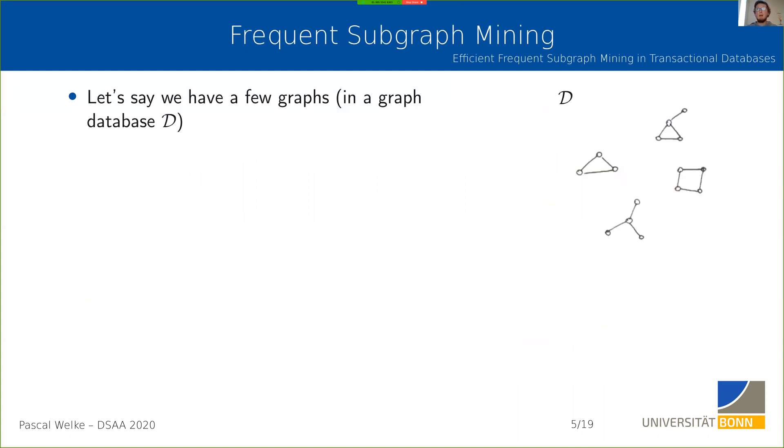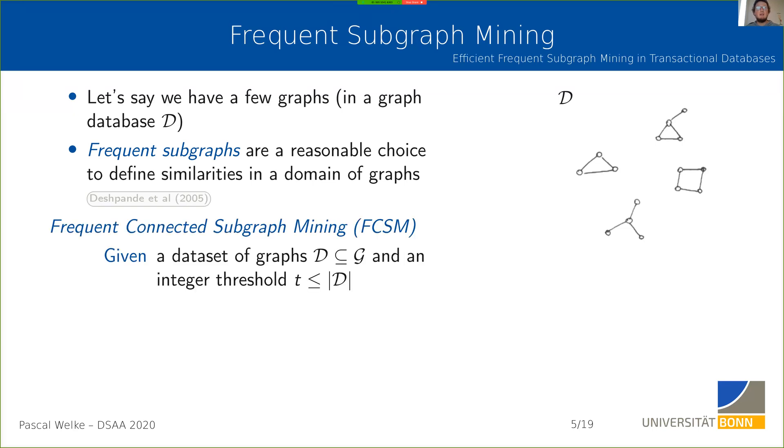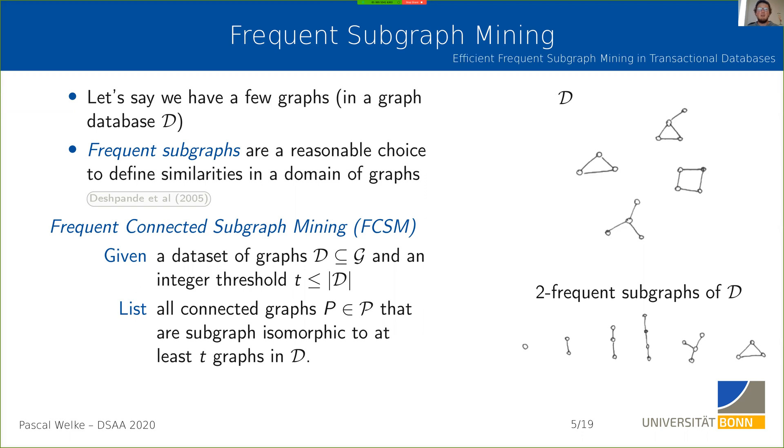Frequent subgraphs are a notion of relevant patterns that you can use for these tasks. Let's say you have a database of graphs, which are called transactions, hence the name transactional databases. You want to find the frequent subgraphs. Given a graph database D and an integer threshold t, we are tasked to list all the connected graphs that are subgraph isomorphic to at least t graphs in D.